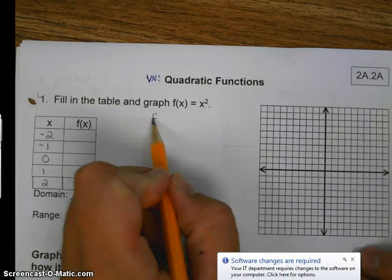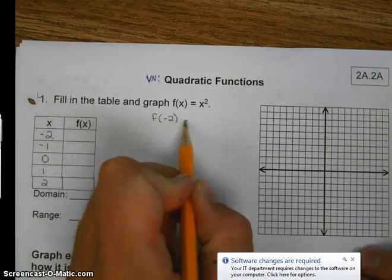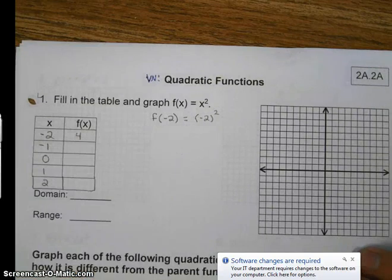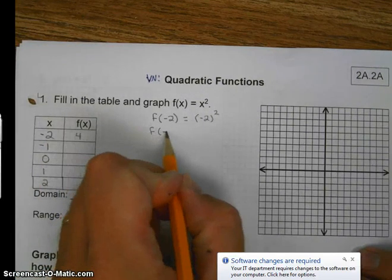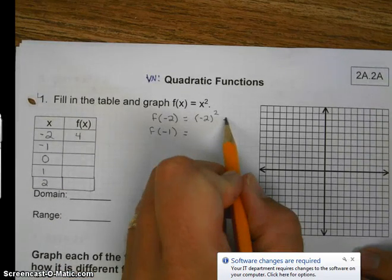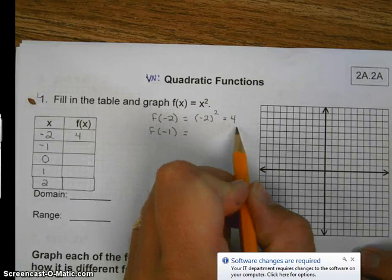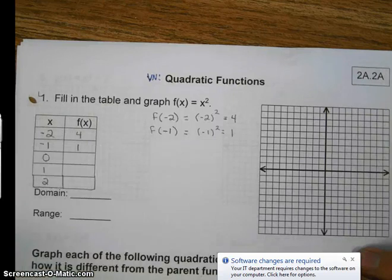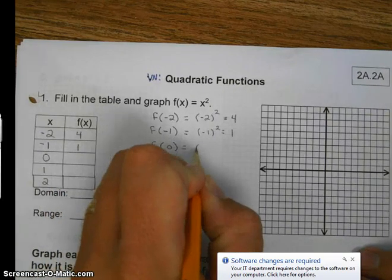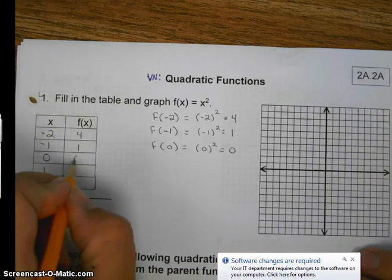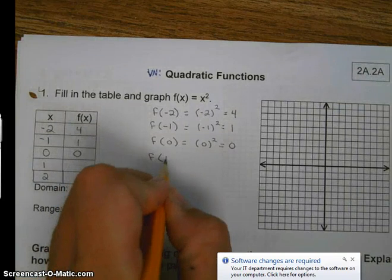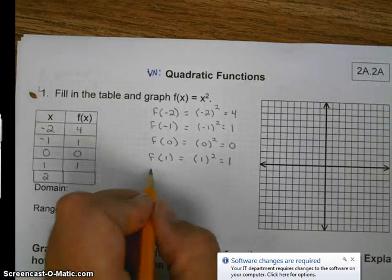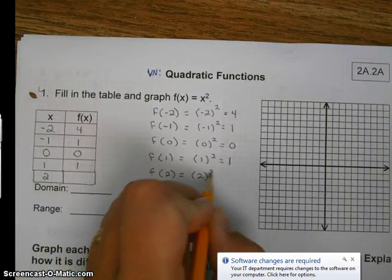So let's start off with f sub negative 2. Our input is negative 2. Plugging that in for x, we get 4. Next input value would be negative 1. Let me go ahead and finish this. The 4 represents the output, or y. So inputting negative 1, output positive 1. Inputting 0, output 0. Inputting 1, output 1. Inputting 2, output 4.